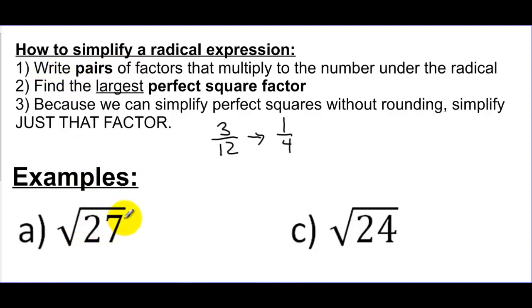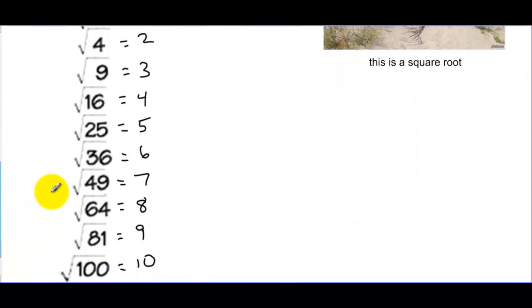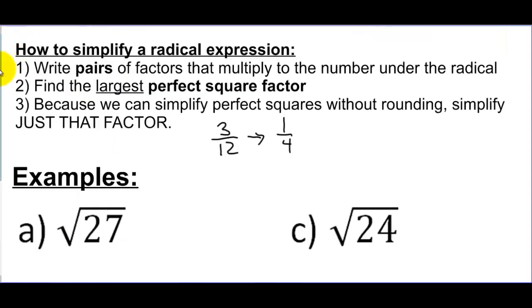In order to do this, we're going to take our radical expression and break it up into factors of the number underneath, which we call a radicand. For this first example, I'm looking at factors of 27. I want one of those two factors to be a number that's on this list — it could be 4, it could be 9, it could be 16. I don't want to just arbitrarily break it up into two numbers; I want to pick it so that one of these numbers is in the list.